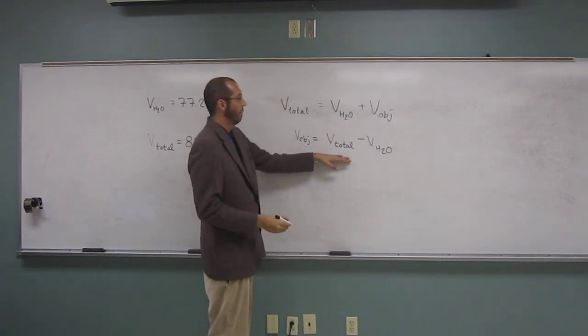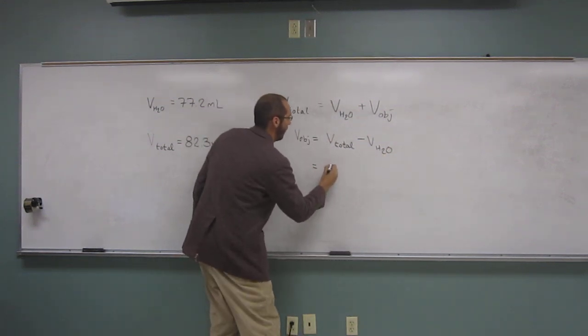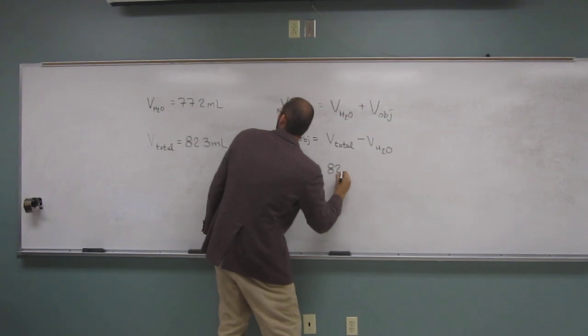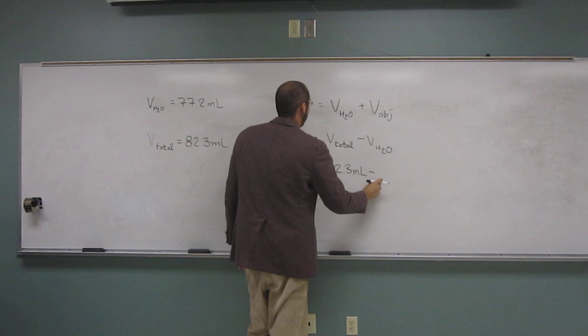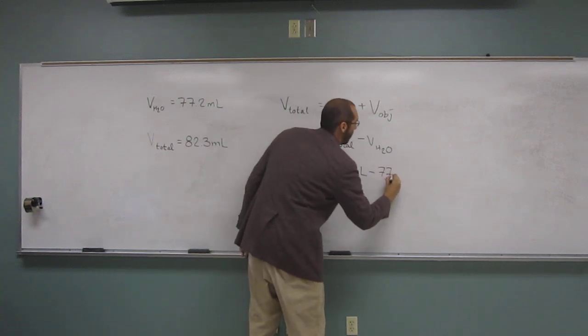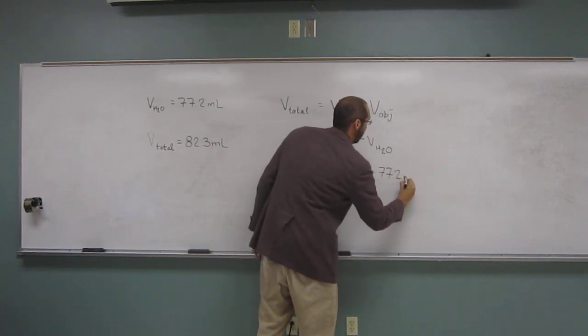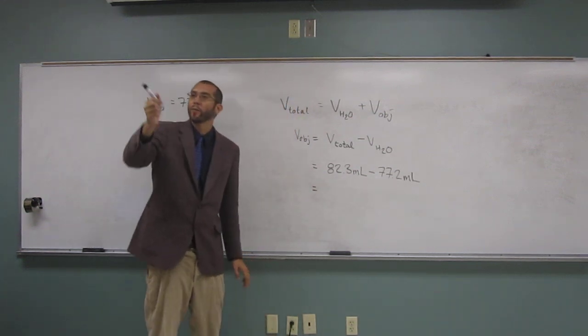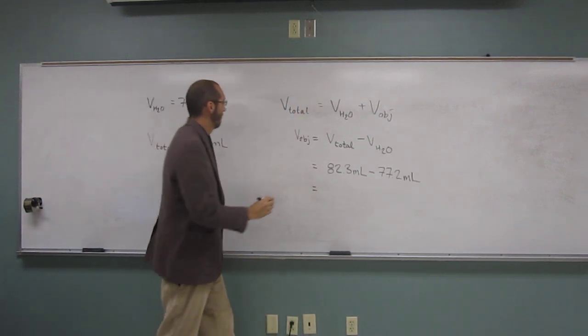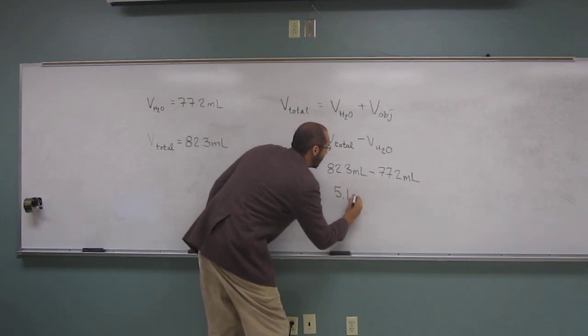Okay, so do we know the volume total? What is that? Yes. 82.3 mils minus what? 77.2 mils. Okay, so when we do that, what do we get for the answer? 5.1 mils. 5.1 mils.